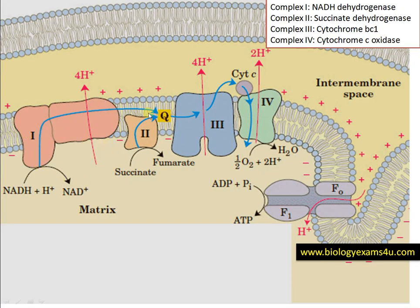This is the electron transport chain, located on the inner mitochondrial membrane where all the complexes are found. Complex 1 is NADH dehydrogenase, Complex 2 is succinate dehydrogenase, Complex 3 is cytochrome BC1, and Complex 4 is cytochrome C oxidase — oxygen receives the electron forming water. The energy from electron flow pumps H+ from the matrix to the intermembrane space, and as H+ moves through ATP synthase, ADP and Pi combine to form ATP.